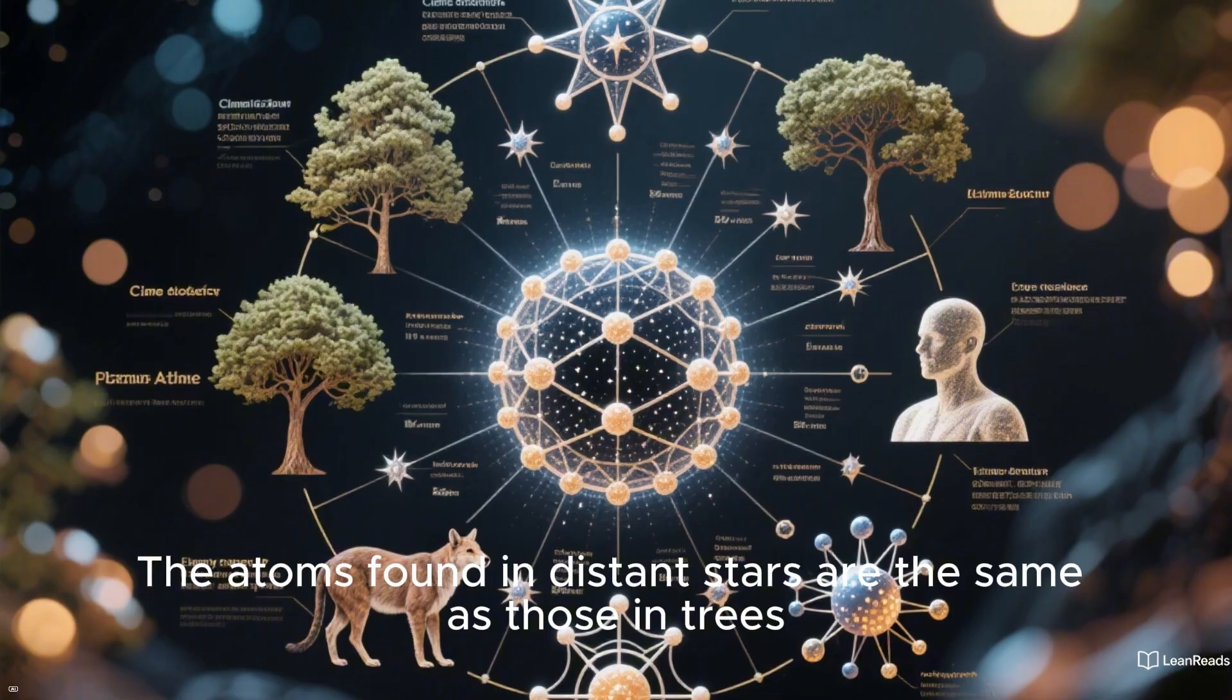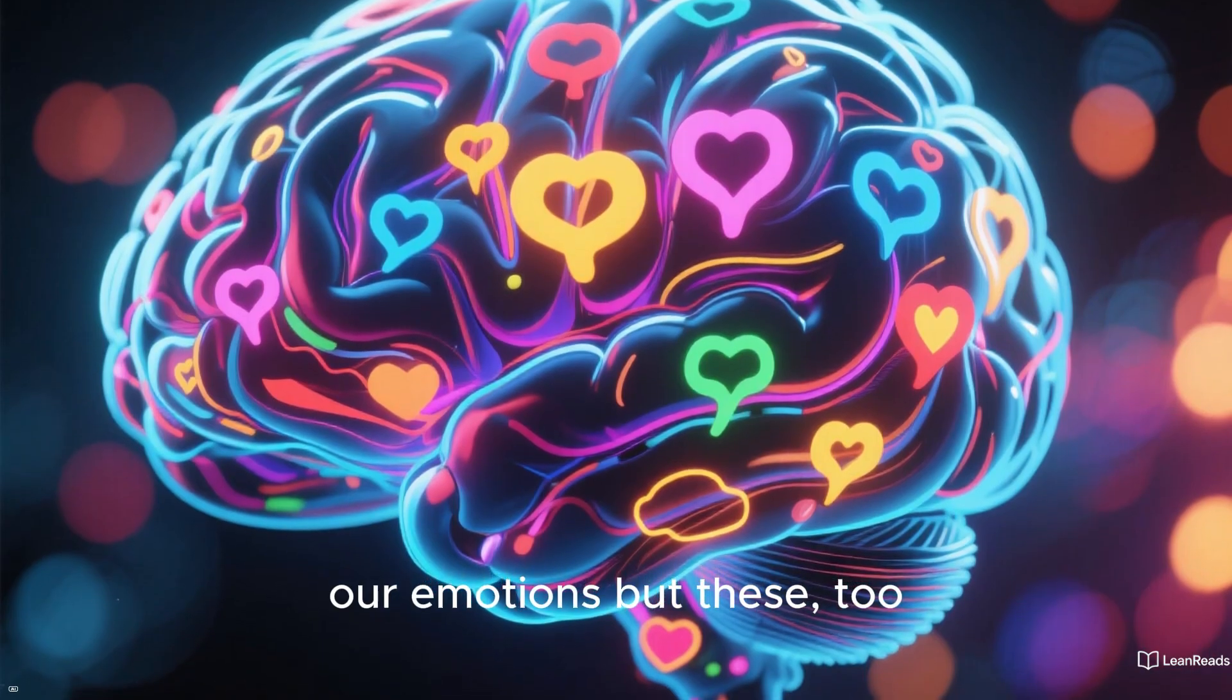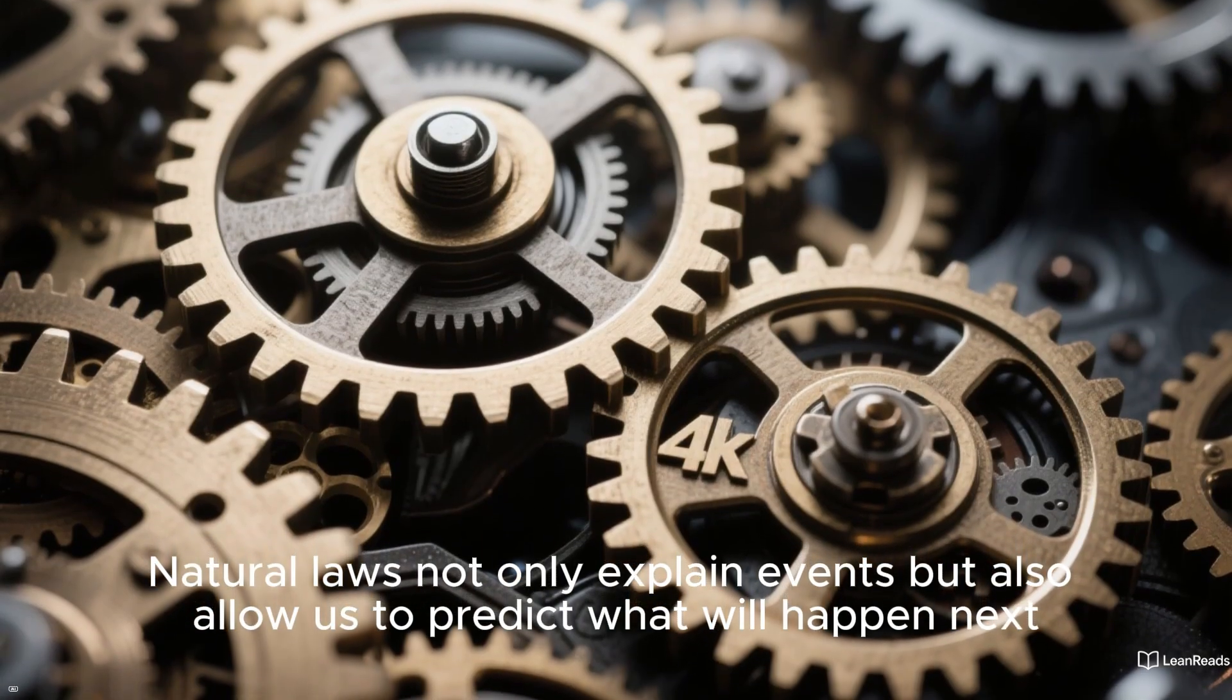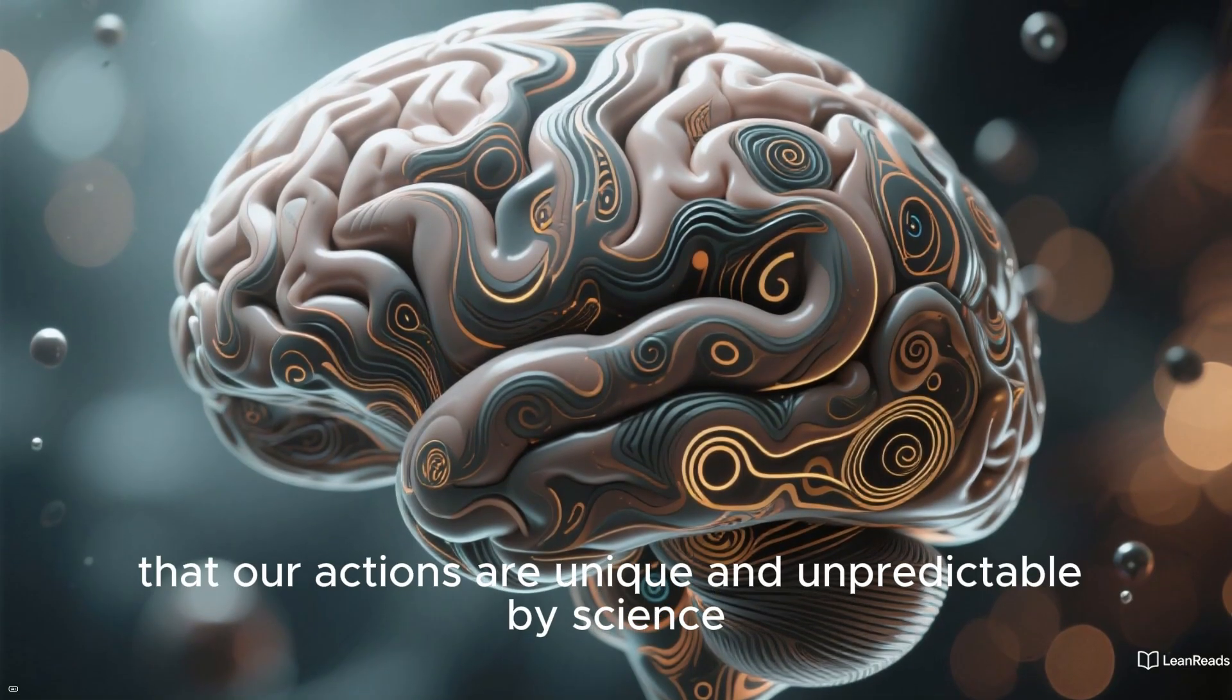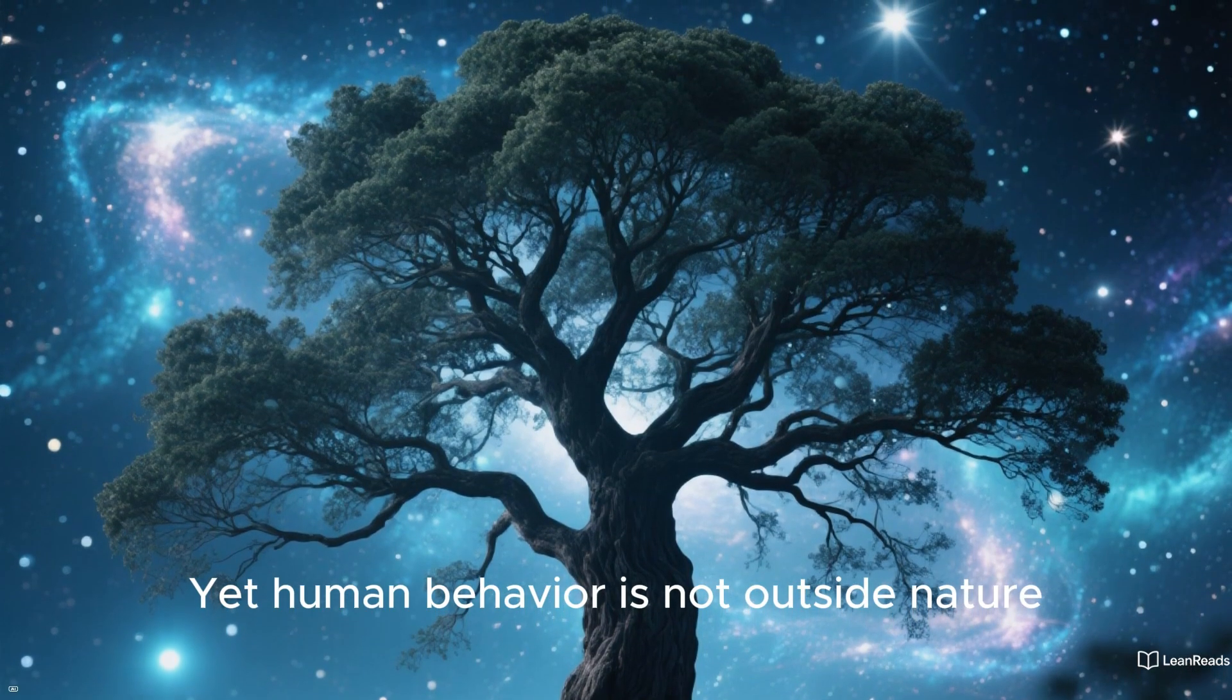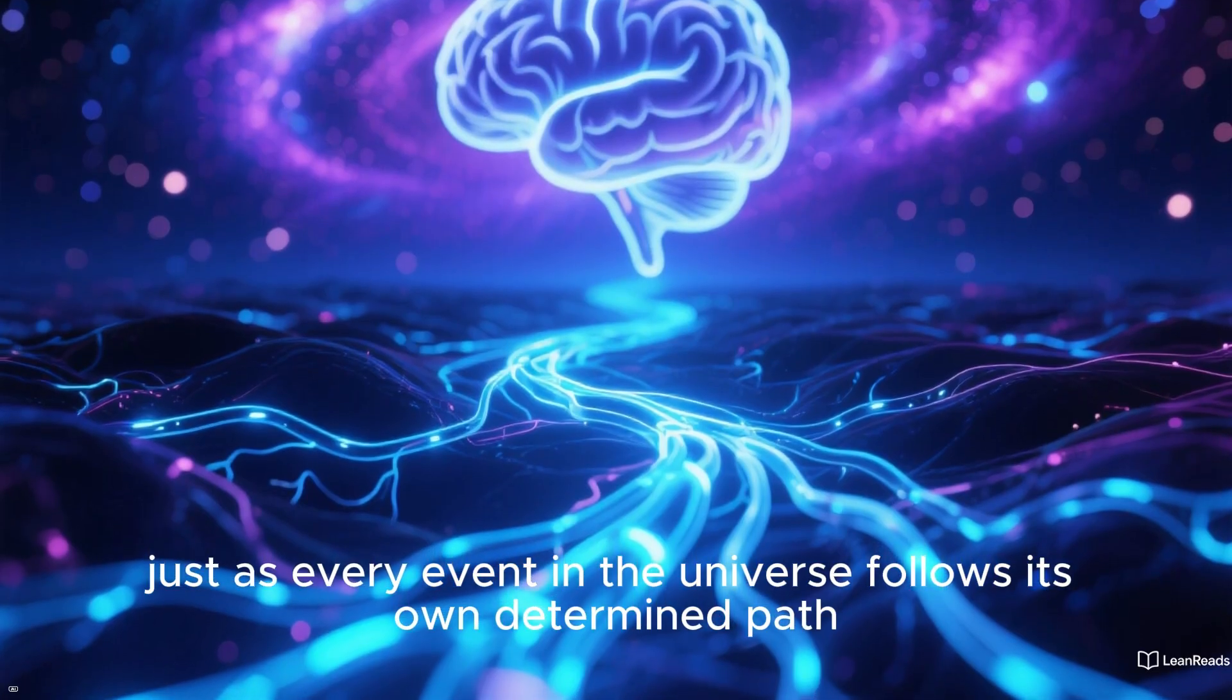The atoms found in distant stars are the same as those in trees, in animals, and in every human being. What makes us unique is our thoughts, our moral sense, our emotions. But these, too, are part of the same physical reality that science describes. Even philosophical questions such as the nature of free will fall within the realm of physics. Natural laws not only explain events but also allow us to predict what will happen next. We feel as though we have free will, that our actions are unique and unpredictable by science. And in a sense, we are free to choose, guided by our thoughts rather than external forces. Yet human behavior is not outside nature. Our decisions are shaped by the same physical laws as everything else. The brain's processes follow natural rules, just as every event in the universe follows its own determined path.